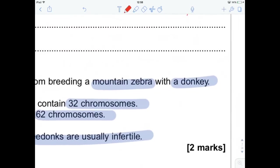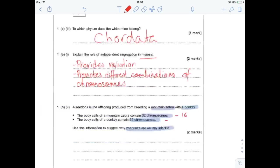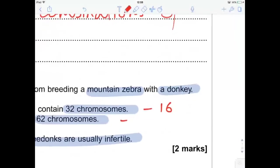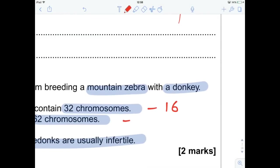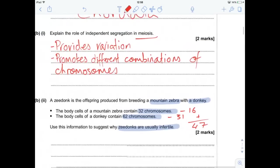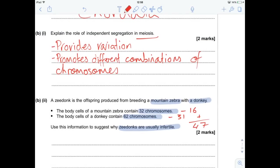They will be the gametes. So the gamete for the zebra is going to be half of 32, which is 16. And the gamete for the donkey is going to be half of 62, which is 31. Now, if we sum those two together, we end up with 47. Now, 47 is an odd number, and that's a problem.